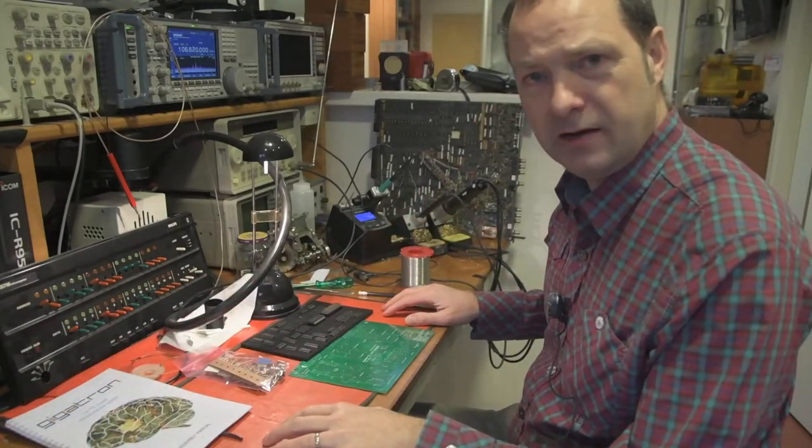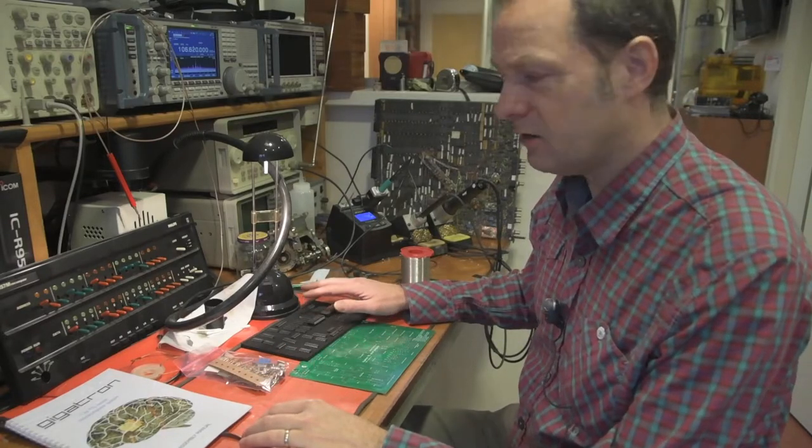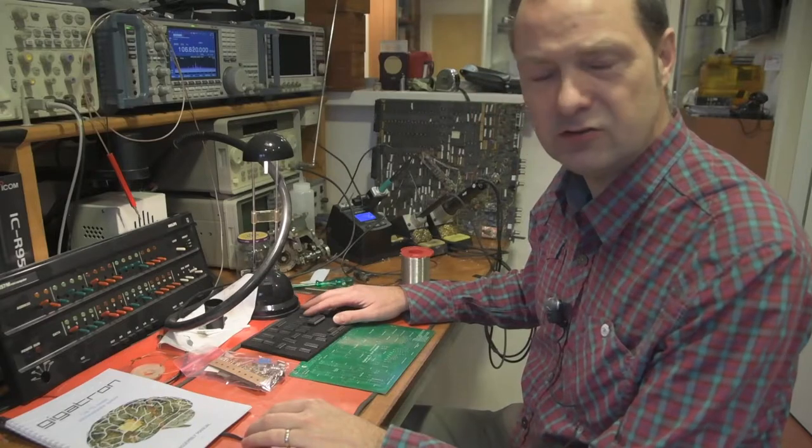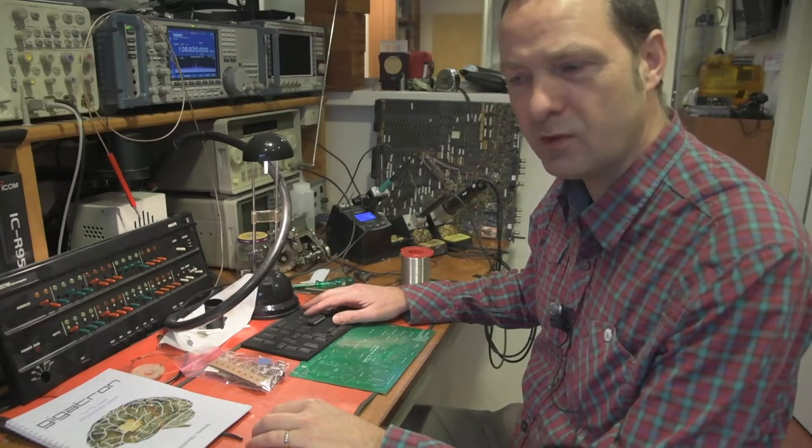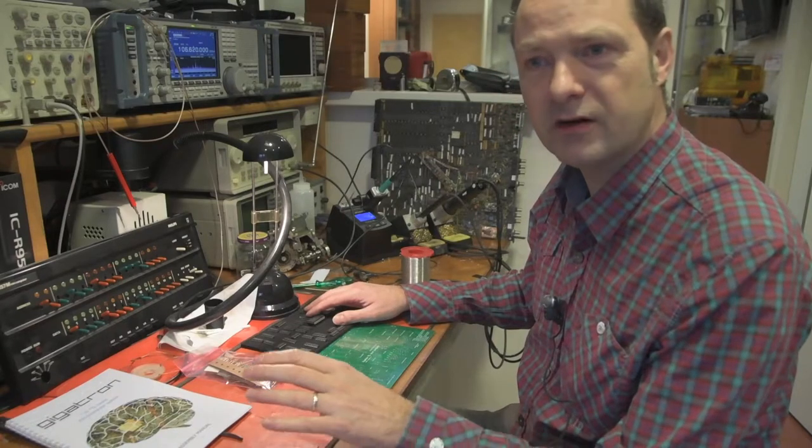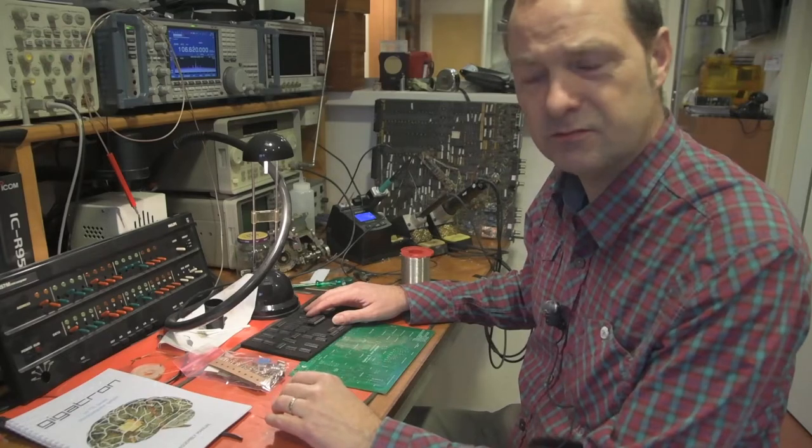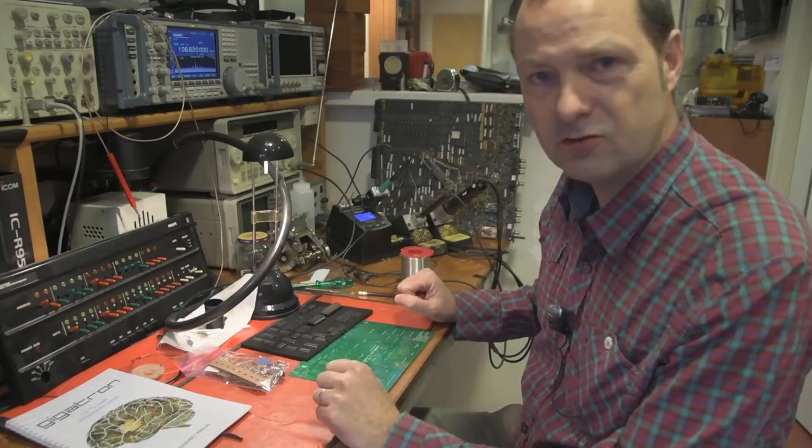I'm using an anti-static mat. That's not exactly needed. These components are fairly easy to deal with and it's hard to break them with static electricity. As a precaution, you could go over and touch something metal in your house that's grounded, like your radiator, and then start soldering.